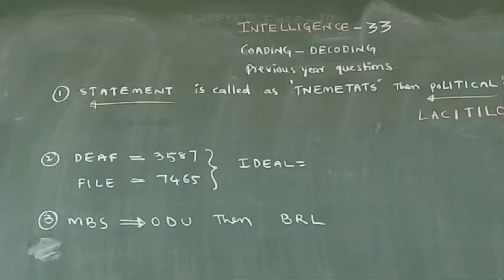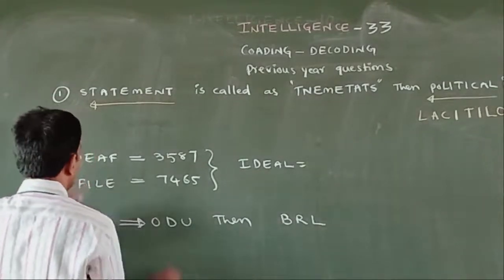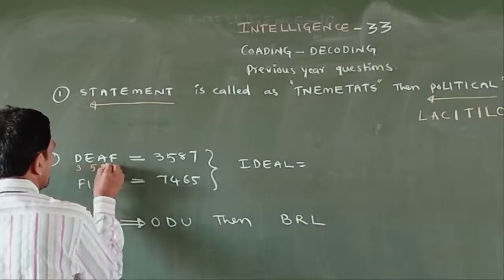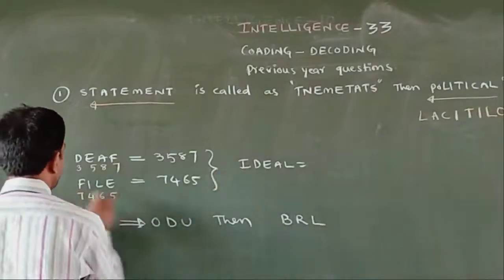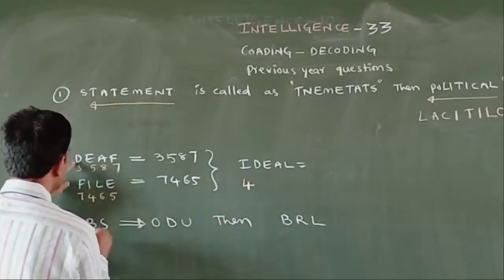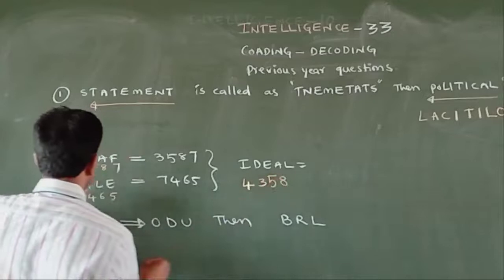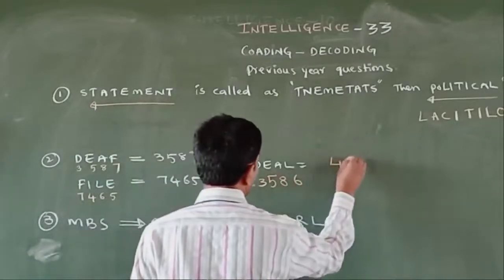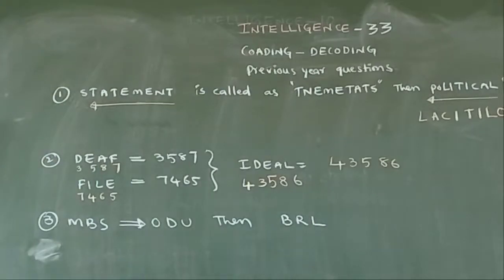Next, DEAF equals 3587, FILE equals 7465, IDEALS equals 425856. MBS leads to ODU, then BRL. What is the IDEAL? D number is 3, E is 5, A is 4, L is 6. So the answer is 4, 3, 5, 8, 6.